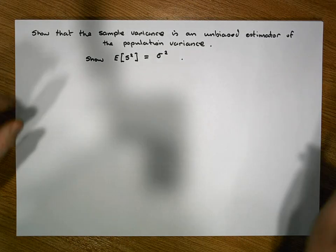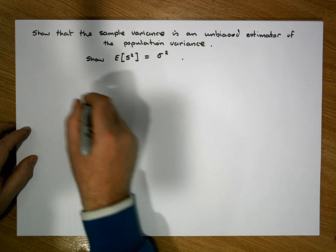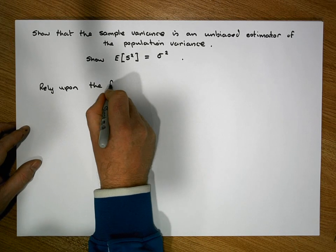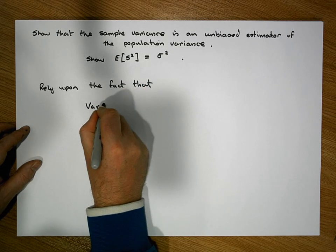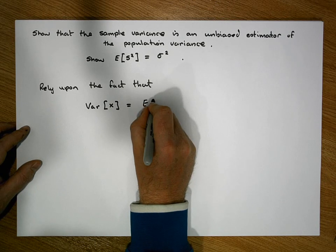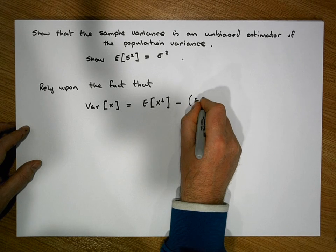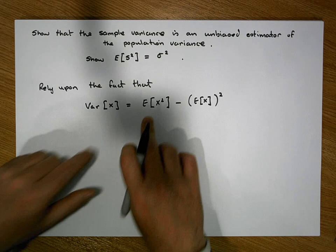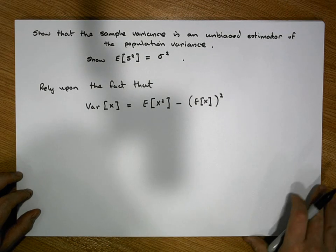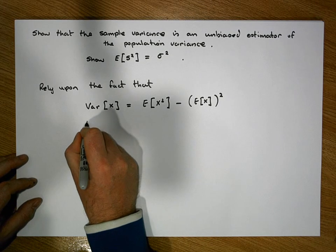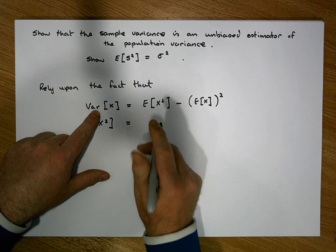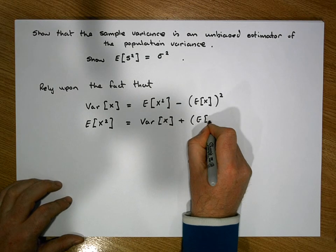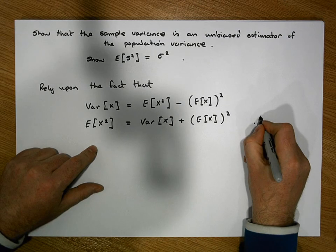To show this we're going to rely upon a number of identities proven in previous videos. The first identity — actually a modification of it — is that the variance of a random variable equals the expected value of the square of the random variable minus the expected value of the random variable, squared. More importantly, we're going to solve for the expected value of the square of the random variable, so that the expected value of X squared equals the variance of X plus the square of the expected value of X. Let's call that identity one.